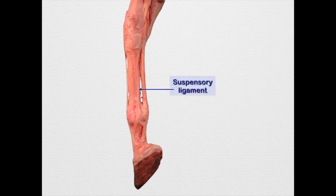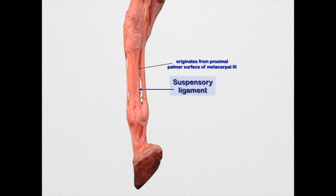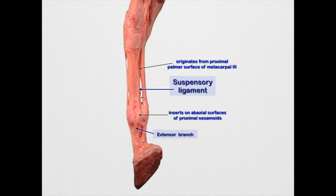The suspensory ligament is going to attach to the proximal surface on the palmar surface of metacarpal 3. It's then going to go distally and insert upon the abaxial surface of the proximal sesamoids. Then it's going to send an extensor branch to the dorsal surface, where it's going to blend into the common digital extensor tendon. This acts like a sling to support the fetlock and prevent overextension.